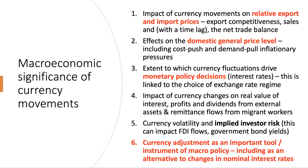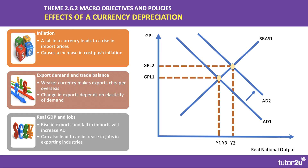A second reason currencies are important is the link between the currency and inflation. Changes in the exchange rate — a key analysis and evaluation point — can affect both demand-pull and cost-push inflationary pressures. Using ADAS analysis: if a currency depreciates, ceteris paribus, exports become cheaper overseas so export sales rise, while imports become more expensive. If the trade balance improves and there's a net injection of export demand into the economy, that leads to an outward shift of aggregate demand and national income increases.